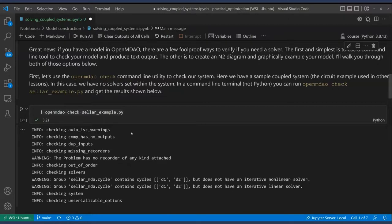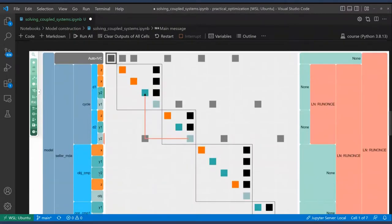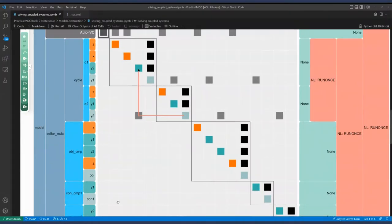Another helpful OpenMDAO tool is the n-squared diagram. So just like we did the OpenMDAO check, we can do OpenMDAO n2 seller example, and here it produces a graphical representation of the problem. In this case here, we see the cycle, and I've highlighted here the kind of backwards feedback coupling here. Now we know that if we have backwards coupling, we need to add a solver to the model, and that we also don't have a solver in this model currently.